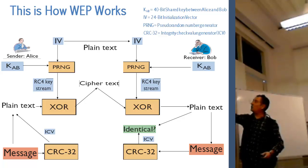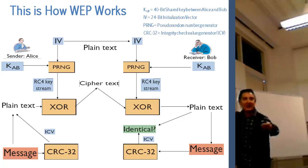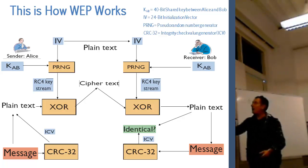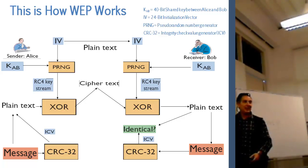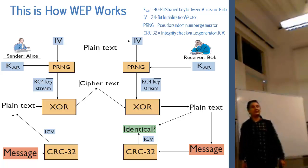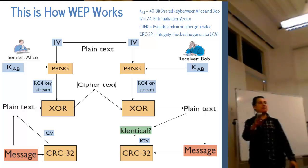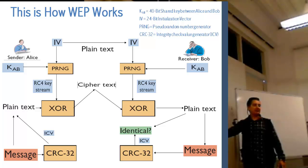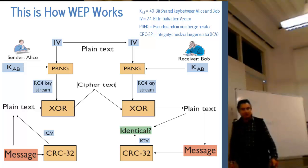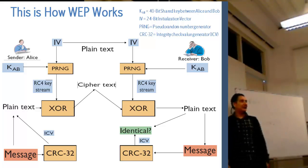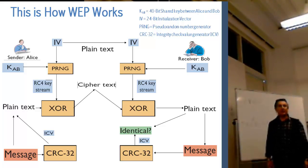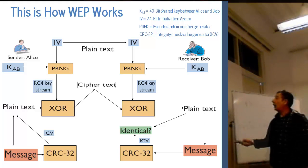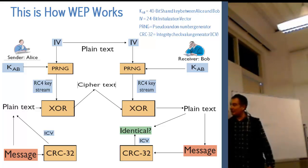KAB goes to the pseudo-random number generator, which is RC4, and the result is the RC4 key stream. I then XOR that key stream with the plaintext, and the output is the ciphertext. When you set up a wireless connection and configure WEP, this is what you are doing - you are using RC4, and it will ask for the key, which you enter. The other side must have the same key, otherwise it won't work.